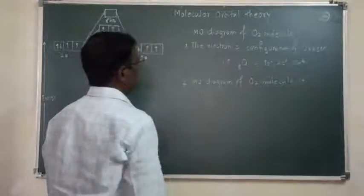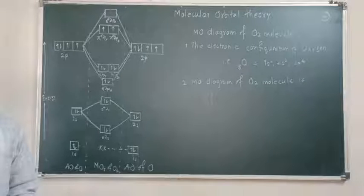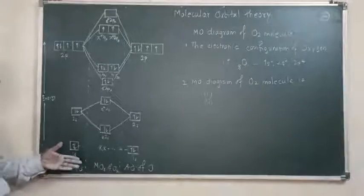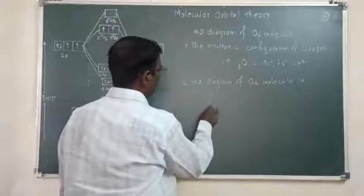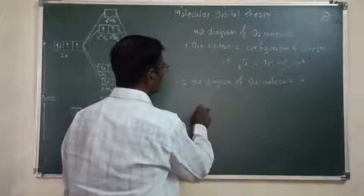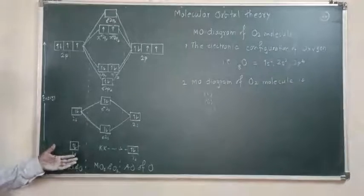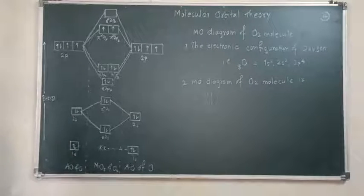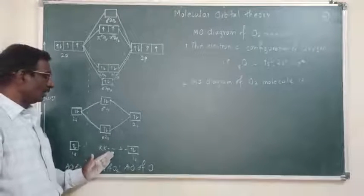Second point: atomic orbitals are shown on the two sides of this diagram. The atomic orbitals of one oxygen atom are shown to the left, and the atomic orbitals of the other oxygen atom are shown to the right side. Molecular orbitals are shown in the middle of this diagram. When atomic orbitals combine to form molecular orbitals, they lose their identity, except for core orbitals which do not take part in bonding.